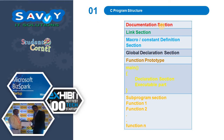The C programming structure consists of: documentation section, link section, macro by constant definition section, global declaration section, function prototype, main method, and sub-program functions. So let's go through them one by one.